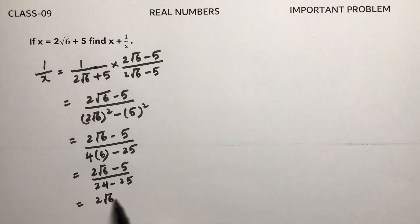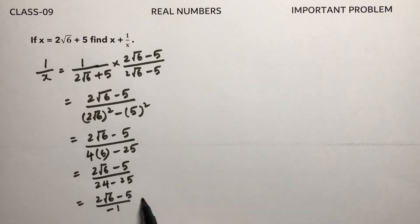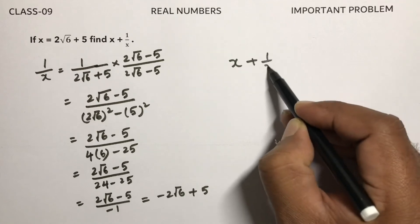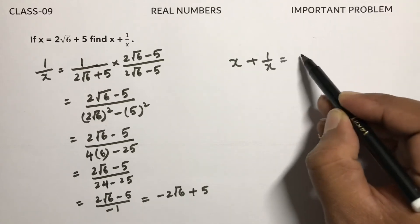24 minus 25, so it is 2 root 6 minus 5 by minus 1. So this step is nothing but minus 2 root 6, minus into minus plus 5. We need to calculate x plus 1 by x.